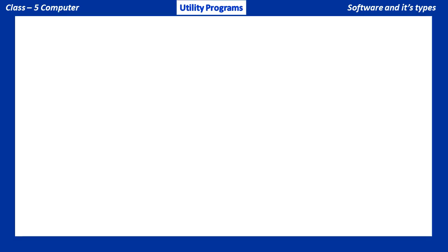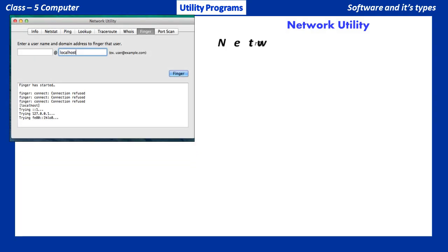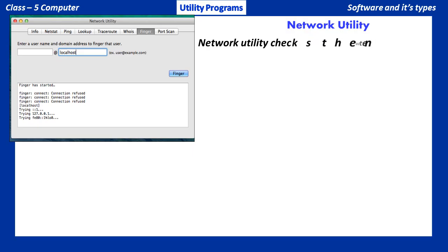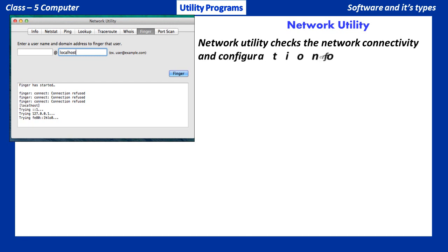Network Utility checks the network connectivity and configuration of network devices. It also examines the network speed and performance, and monitors network traffic from the console.